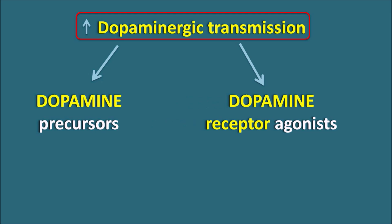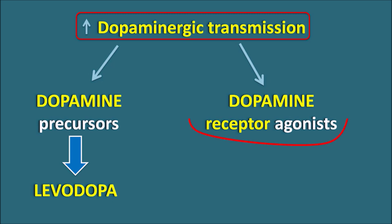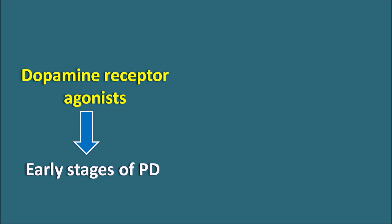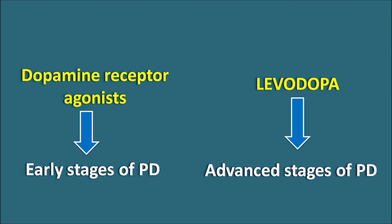An example of a dopamine precursor is the well-known drug levodopa, which is a dopamine precursor that can enter the CNS where it is converted to dopamine, thereby increasing dopaminergic transmission. So levodopa can be used in the treatment of Parkinson's disease. Today, however, we are going to focus on drugs acting on dopamine receptors as agonists. Dopamine receptor agonists are particularly used in the early stages of Parkinson's disease, while levodopa is the anchor drug given in the advanced stages.